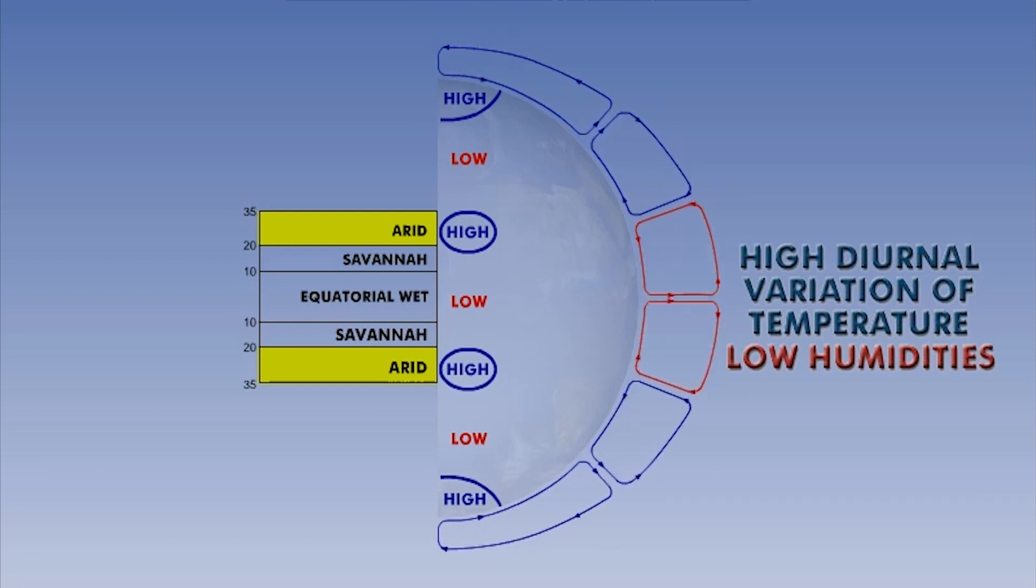This huge temperature reduction at night can create very strong nocturnal inversions or radiation inversions. These can be hazardous to aviation, frequently causing wind shear on the approach or departure from airfields within the arid zone.